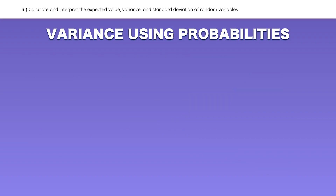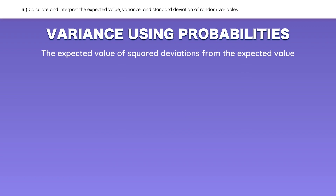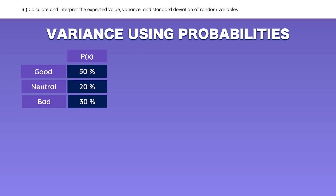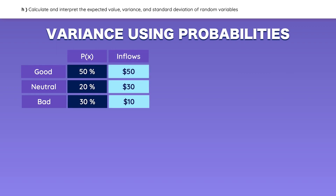You should also know how to calculate the variance using probabilities. It is the expected value of the squared deviations from the expected value. Assume that the economy can be either good, neutral, or bad — here are the probabilities of each outcome as well as the inflows you receive in each case. The first step is to calculate the expected value, which is the probability-weighted average of the inflows — it should be equal to 34.